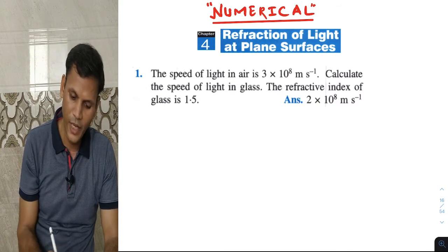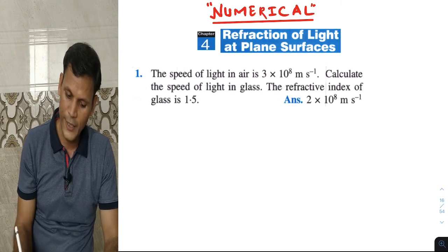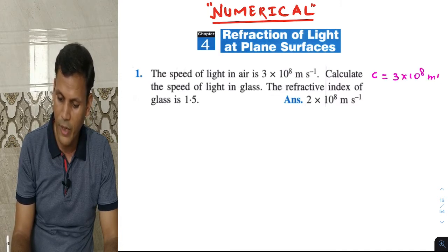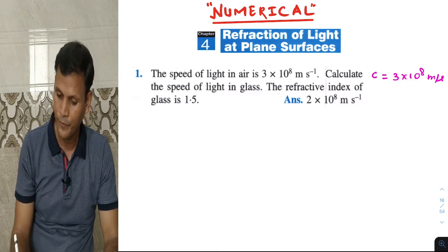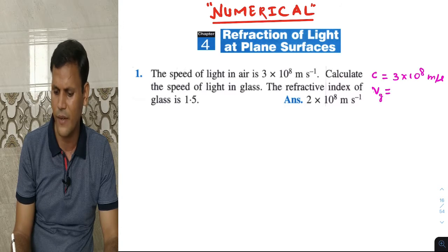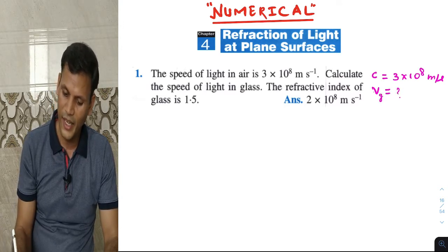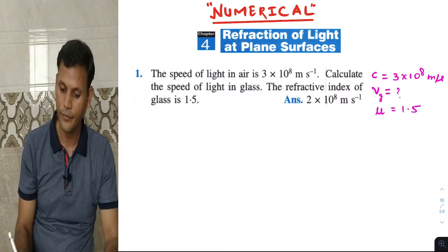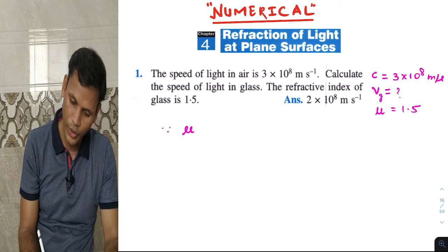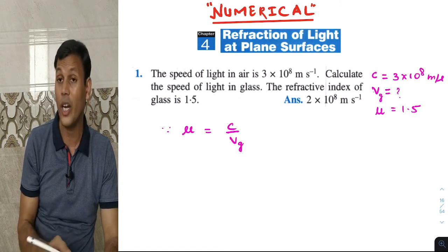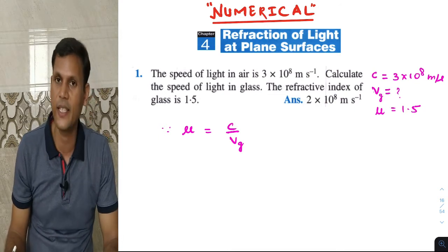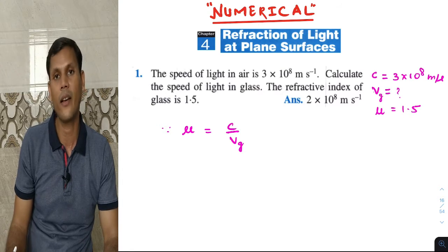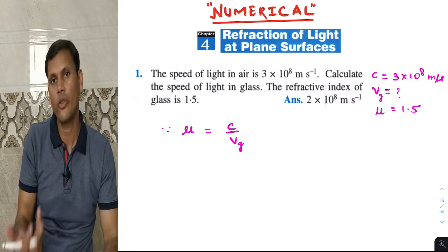First we will write what information is given. The speed of light in air, represented by c, is 3 into 10 raise to 8 meter per second. We need to calculate the speed of light in glass, v_g. The refractive index of glass, mu, is given as 1.5. Since mu equals c upon v_g, the refractive index is the ratio of speed of light in air or vacuum to the speed of light in glass.